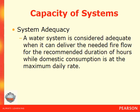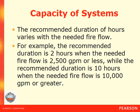A water system is considered adequate when it can deliver the needed fire flow for the recommended duration of hours while domestic consumption is at the maximum daily rate. The recommended duration of hours varies with the needed fire flow. For example, the recommended duration is two hours when the needed fire flow is 2,500 gallons per minute or less, while it is 10 hours when the needed fire flow is 10,000 GPM or greater.